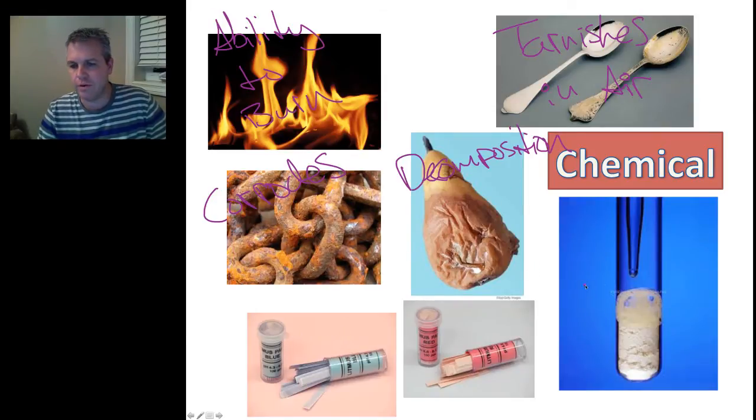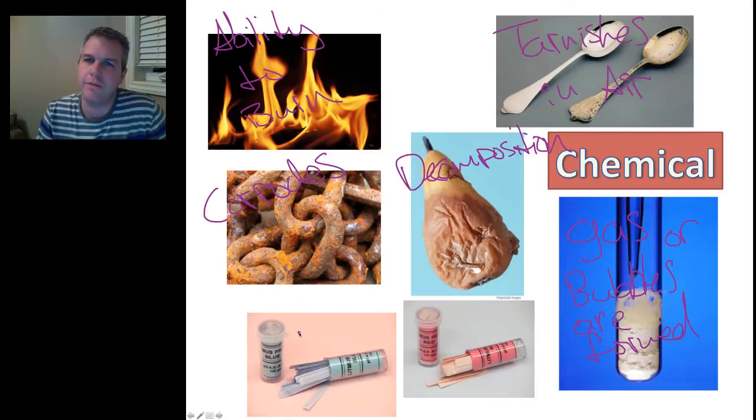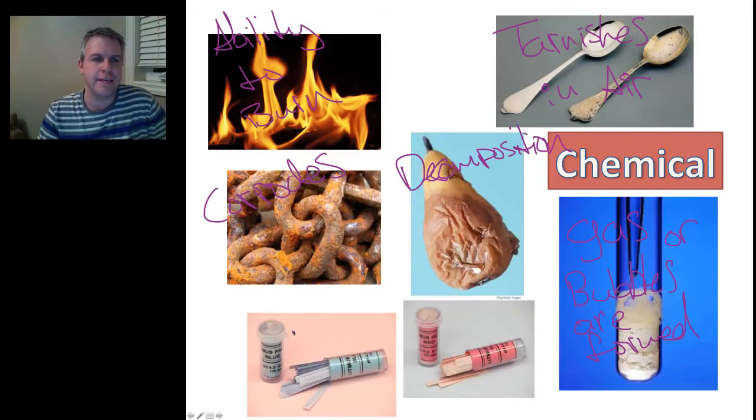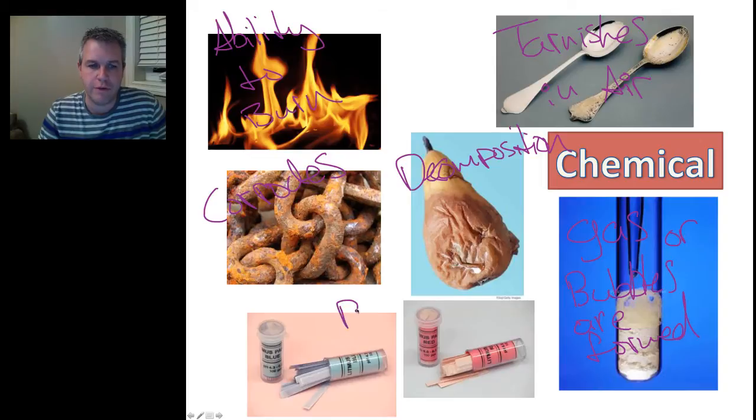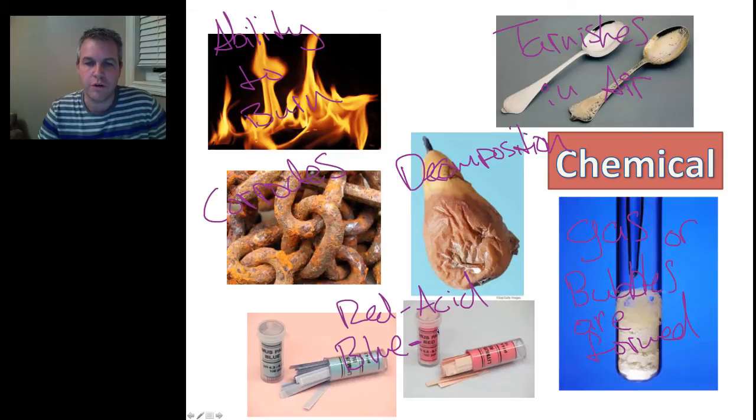And over here, we're going to look at whether it creates a gas or bubbles are formed. And then the last thing we're going to look at is how does it react with blue and red litmus paper. So, if these two of them, if we do a test, if it remains red or turns red, then it is an acid. If it remains blue or turns blue, then we are dealing with a base.